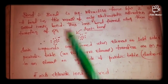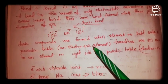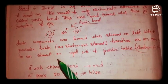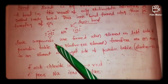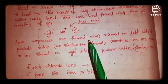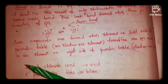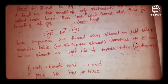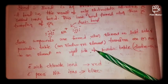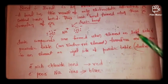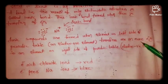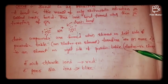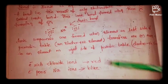Ionic compounds are formed when elements on the left side of the periodic table transfer one or more electrons to an element on the right side of the periodic table. The elements on the left side — s-block elements — are called electropositive elements. When they transfer electrons to the elements on the right side — p-block elements, which are electronegative in nature — ionic bonds are formed.